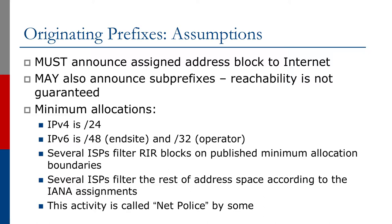We can also announce sub-prefixes and this is the traffic engineering part, though the reachability of these sub-prefixes is not guaranteed. The minimum allocation for IPv4 today is a slash 24. For IPv6 it's a slash 48 for an end site and a slash 32 for a network operator. Several network operators will filter registry blocks based on the registry's published minimum allocation boundaries, and several ISPs will filter the rest of address space according to the IANA assignments. Some people call this activity 'net police.'